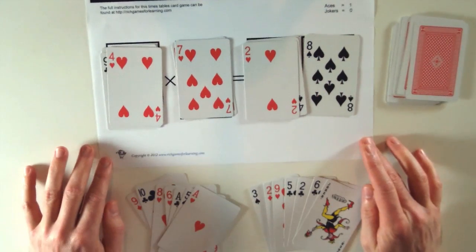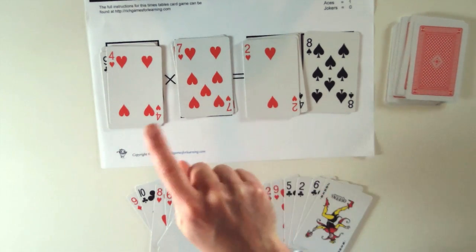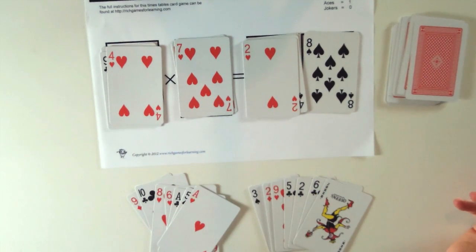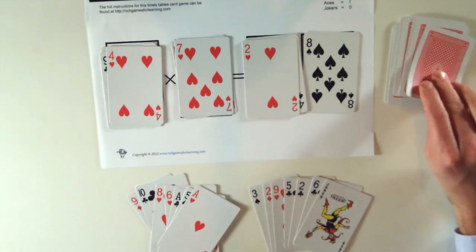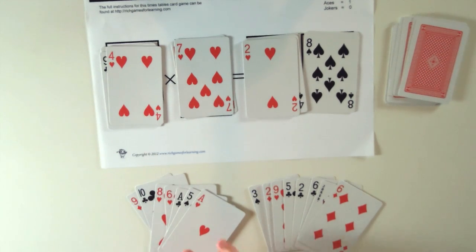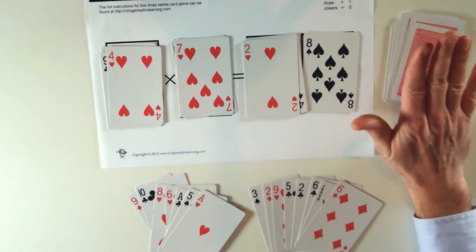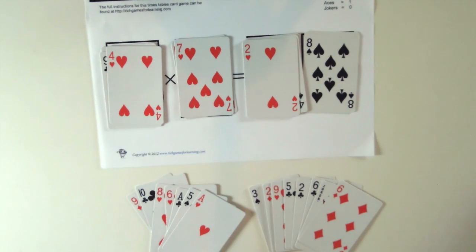Now if a player can't do anything, like let's say for example this player couldn't put any cards down to make a times table sum or couldn't see how they could do it, if that happens, they need to pick up an extra card and then it goes back to this player. And players keep on playing and keep on picking up extra cards until there's no more cards left in the pickup pile.